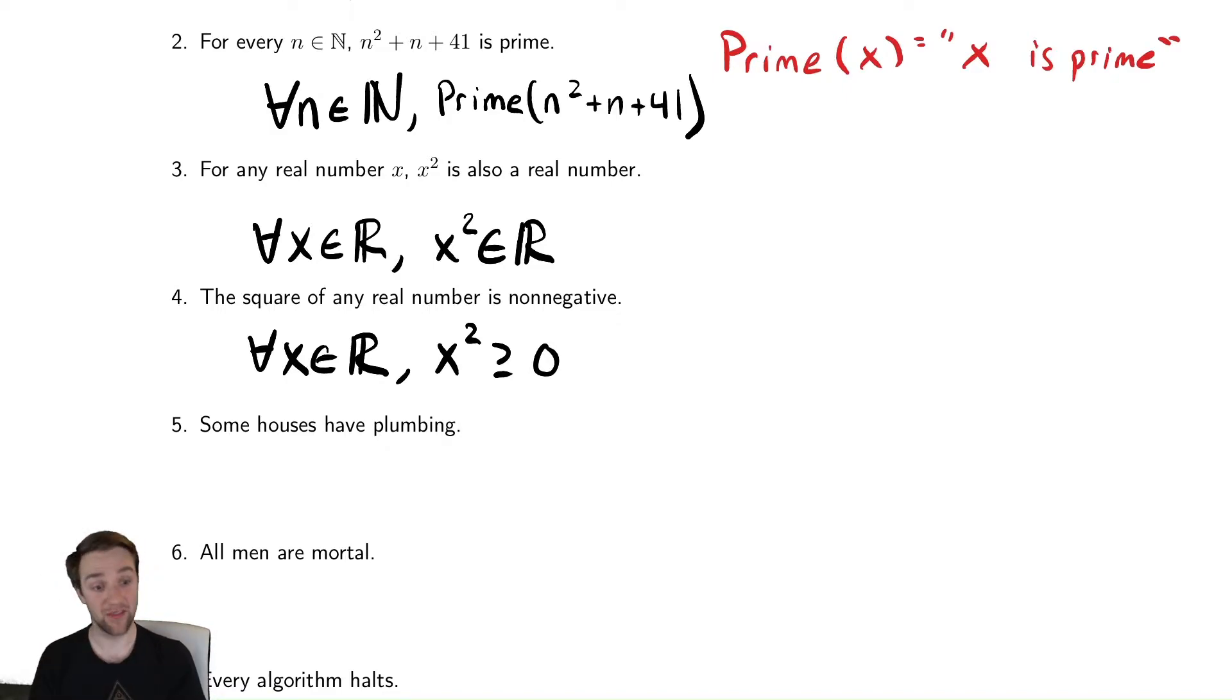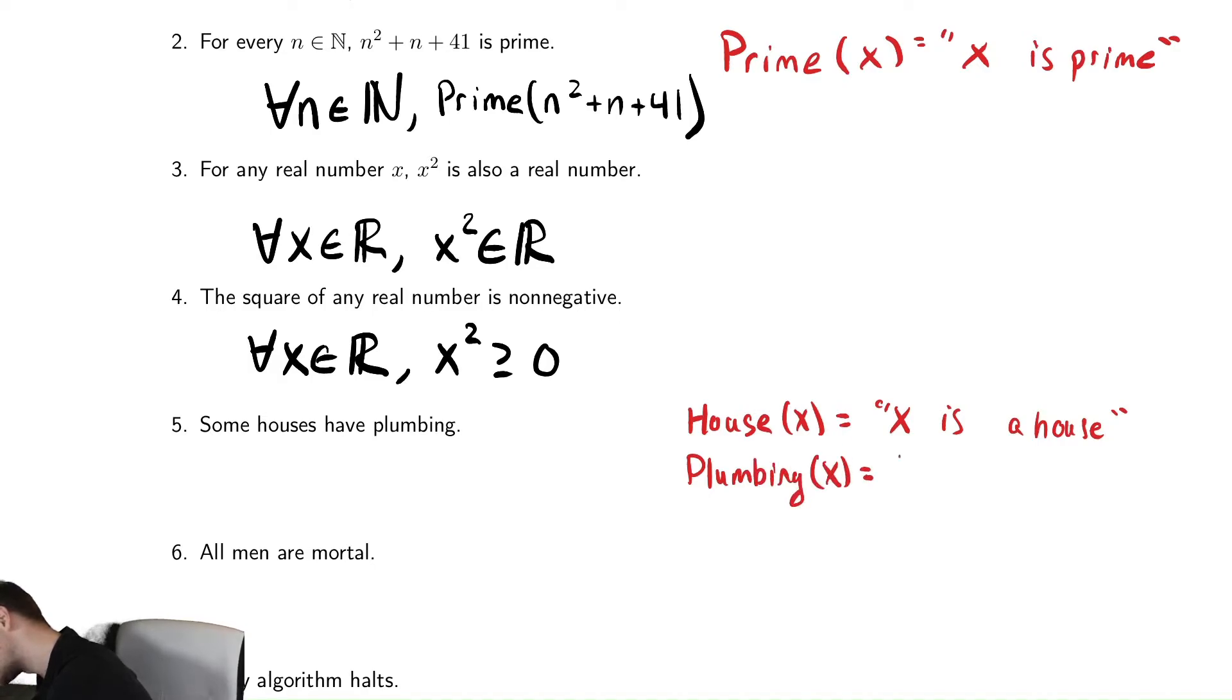The next one says some houses have plumbing. Some is an interesting word in math. A lot of people interpret some to mean more than a couple probably. So five, six, something like that. In math, some means at least one. That's a there exists idea. So this is there exist houses that have plumbing. In order to express this, I don't have math notation for that though, right? So I'm going to need to define some predicates. So I'm going to define a predicate that says something is a house. It says x is a house. And then I'm going to define one that says x has plumbing.